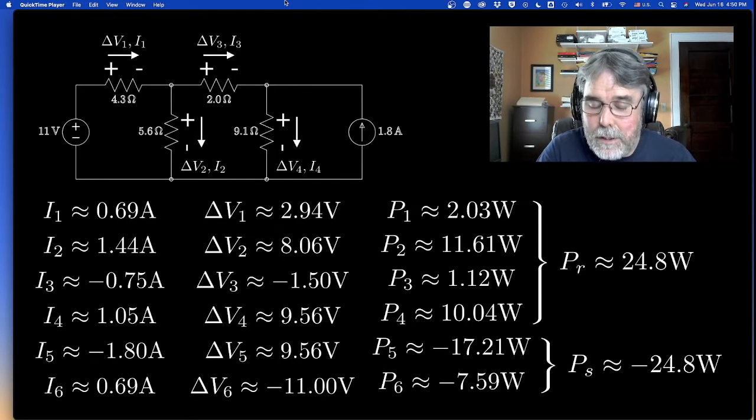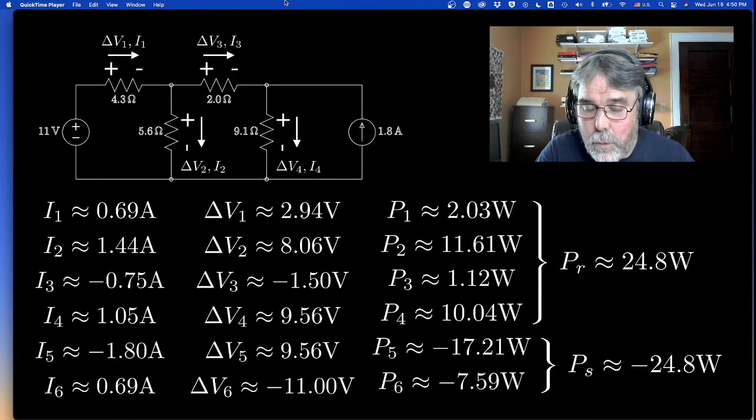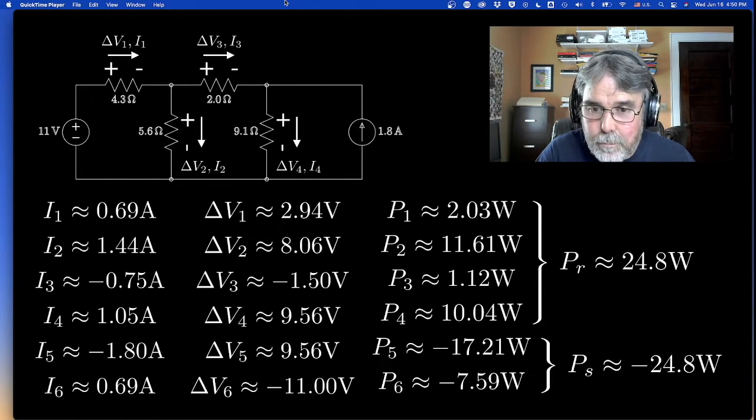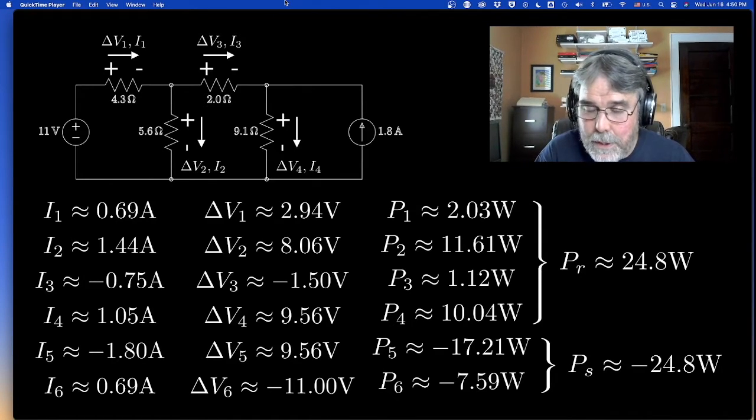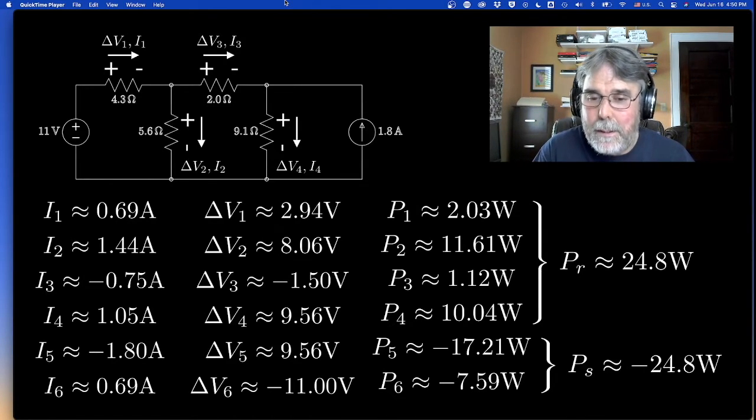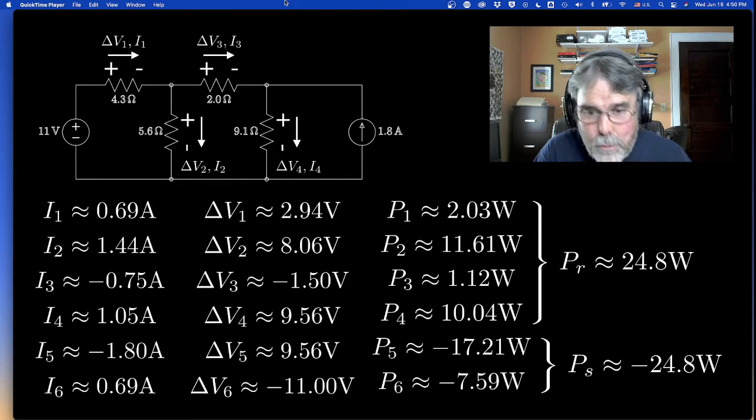If it does that, the elements that it's flowing through will dissipate that power. But if it's going from low voltage to high voltage, there has to be an active source there, sourcing power. And then the calculation will produce a negative power.